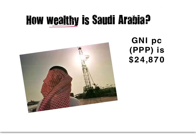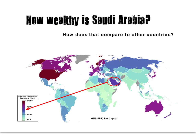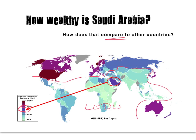The first thing you could ask yourself is how wealthy is Saudi Arabia. When you take a look at the GNI per capita, which purchasing power parity is $24,870 — is that a lot of money? Does that mean that the people in Saudi Arabia are wealthy? You can see in this map of GNI per capita that it puts it towards the middle — it's reasonably well off. If we put in the MEDC/LEDC line here, we can see that according to the GNI per capita, Saudi Arabia is one of the most developed of the LEDCs. Very few LEDCs are as dark a blue, and therefore very few of them are as rich. So in terms of economic development, Saudi Arabia is pretty well off.